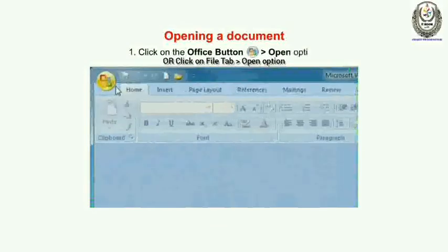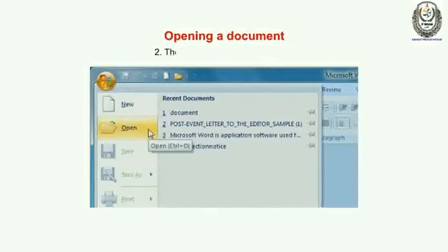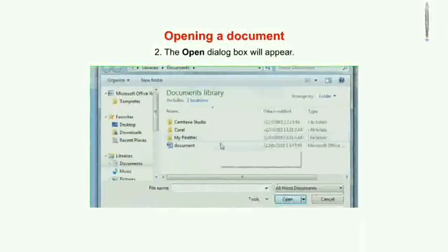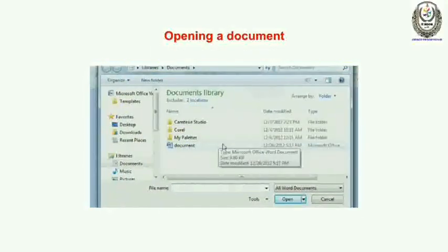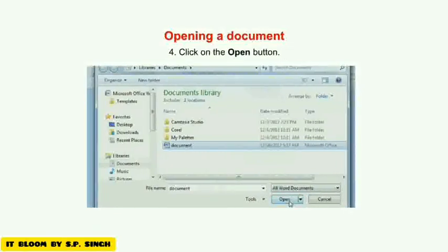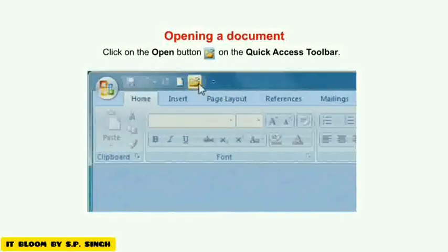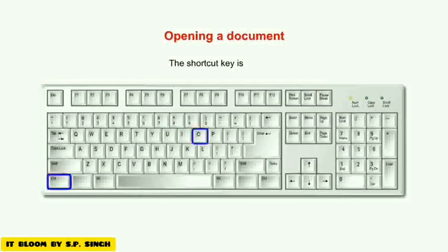Let us now learn how to open a document. Number one: click on the Office button or File button, then click on Open option. Number two: the Open dialog box will appear. Number three: select the file that you want to open. Number four: click on the Open button, or click the Open button on the Quick Access Toolbar. The shortcut key is Ctrl + O.